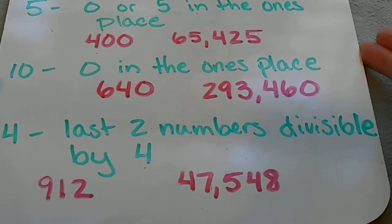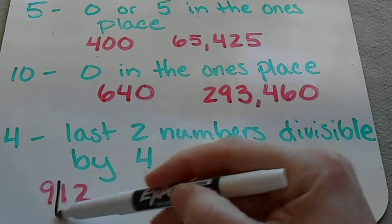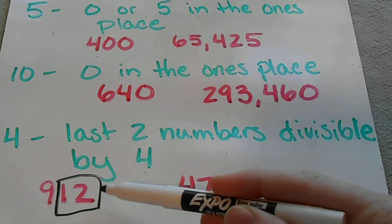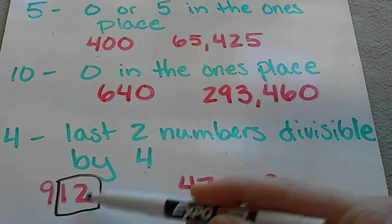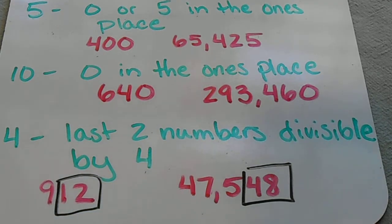If it's divisible by 4, you're going to look at the last two digits, and if that number is divisible by 4, then the whole number is divisible by 4. So 12 is divisible by 4, and so is 48. So both of these numbers would work.